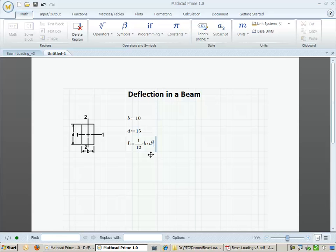We can also put in the equation for the moment of inertia for a rectangular cross-section, which is equal to 1/12, the width times the height cubed.